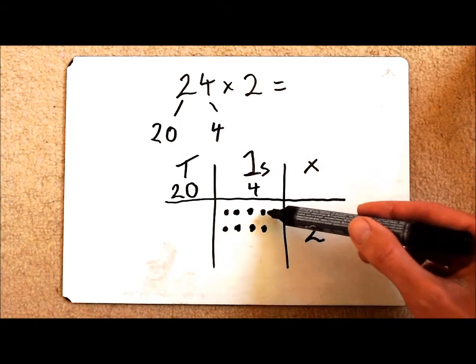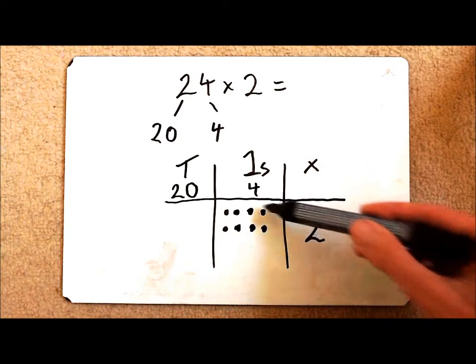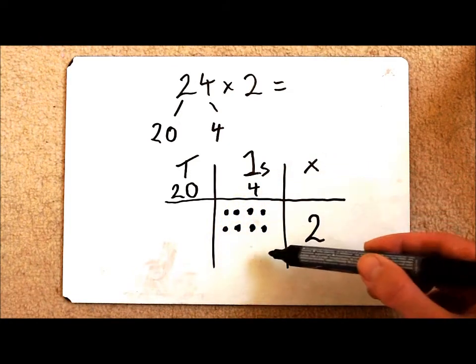There we have it. 2 lots of 4. And this is my array for 2 times 4, which is 8.